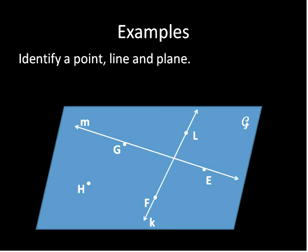Alright. So here are some examples that you can see all of these different things all put together. A couple of points that are on there. The point G, the point L, E, F, and H. Those are points that are on this plane.